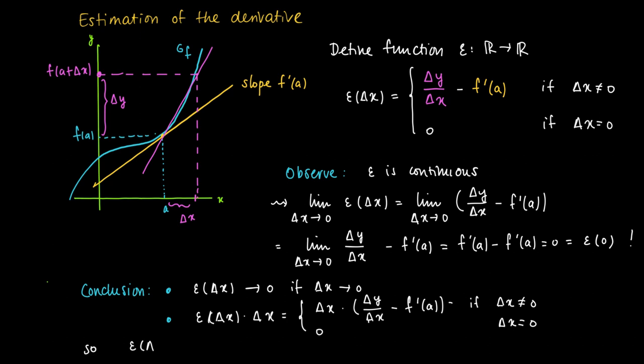So if Δx is not equal to 0, then we see that ε(Δx) times Δx equals the absolute change in function value Δy minus the linear estimate of the change, which is Δx times f'(a).